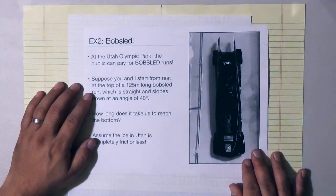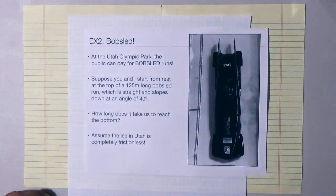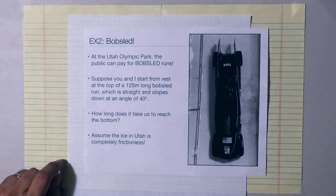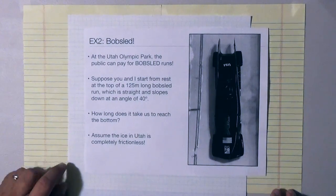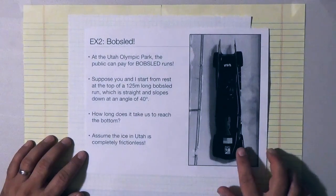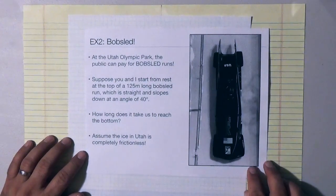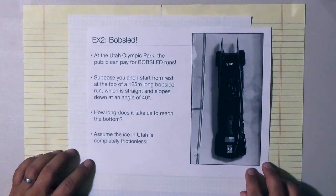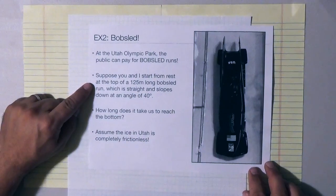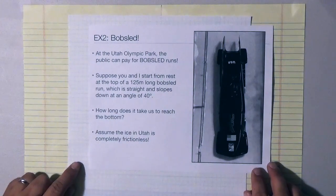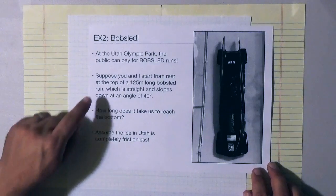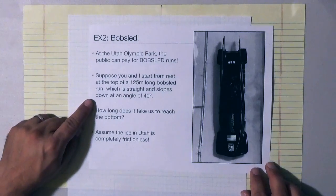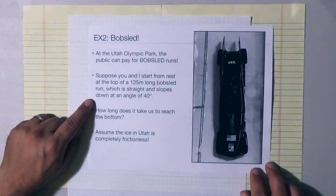This is an example about bobsledding. Bobsledding is one of my favorite Olympic sports. At the Utah Olympic Park you can pay to go bobsledding. So let's suppose you and I are doing that together and we start from rest at the top of a 125 meter long bobsled run and in this case let's imagine that the run is straight and it slopes down at an angle of 40 degrees.